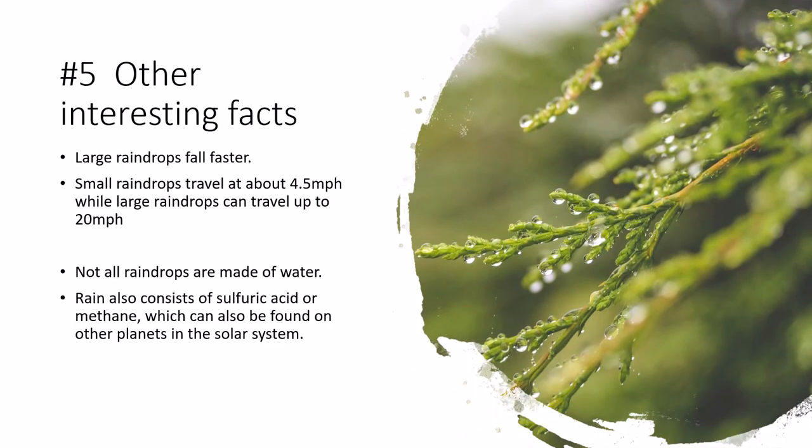Large raindrops fall faster. Small raindrops travel at about 4.5 mph, while large raindrops can travel up to 20 mph. Not all raindrops are made of water — rain also consists of sulfuric acid or methane, which can also be found on other planets in the solar system.